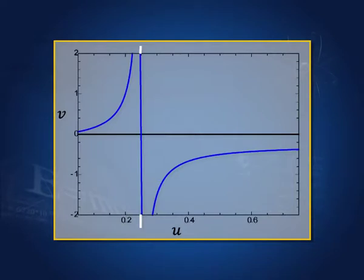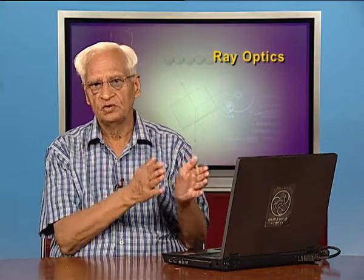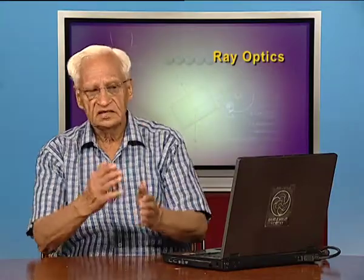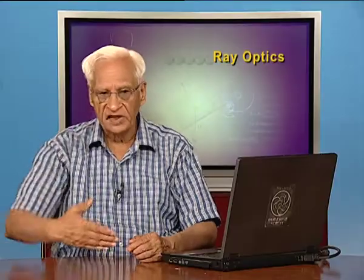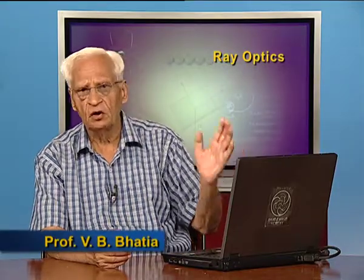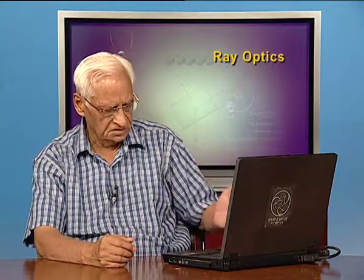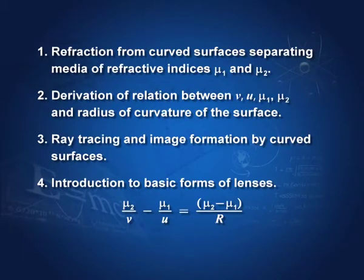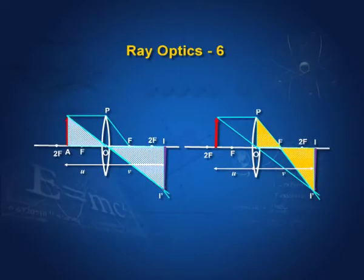In the last lecture, we studied refraction from curved surfaces separating media of refractive indices mu 1 and mu 2. We derived the relation mu 2 by V minus mu 1 by U equal to mu 2 minus mu 1 by R, which relates image distance, object distance, and the radius of curvature. This relation holds whether the surface is convex or concave towards medium mu 1. We also saw how images are formed by such surfaces and how to trace rays. At the end, we introduced the basic forms of lenses, and we now continue from that point.